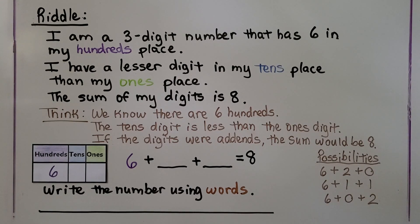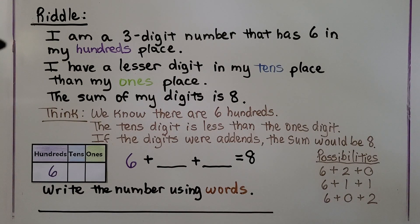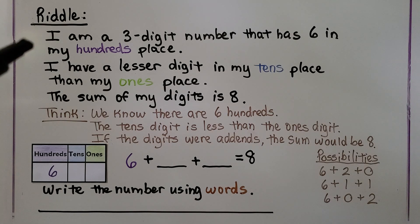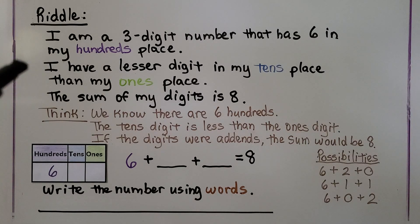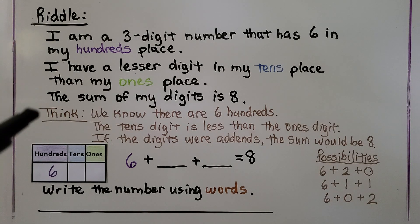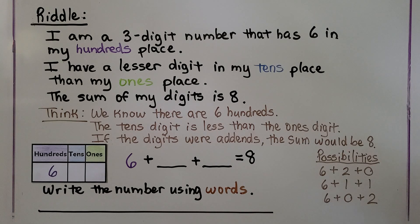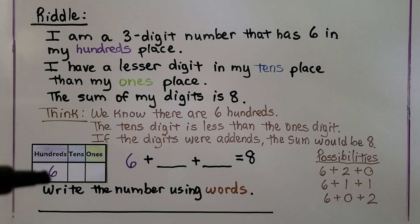Here we have a riddle: 'I am a three-digit number that has six in my hundreds place. I have a lesser digit in my tens place than in my ones place. The sum of my digits is eight.' So we know there are six hundreds — there's a six in the hundreds place.